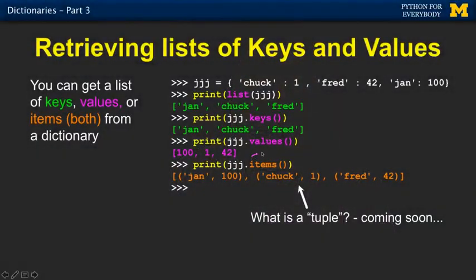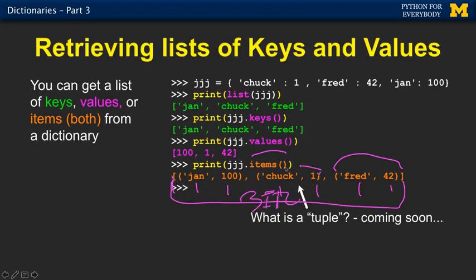One thing that we'll talk about in the next is what we call tuples, but there is another method called items that gives us back a list of key value pairs, which is different than the dictionary itself, and it is a list. So if you look at this as a list, these little guys with parentheses are called tuples, which is the next chapter. But you see we see the Jan maps to 100, Chuck maps to 1, Fred maps to 42. This outer thing is a three item list, but each item itself is a data structure called a tuple, but we'll talk about that in a short period of time.